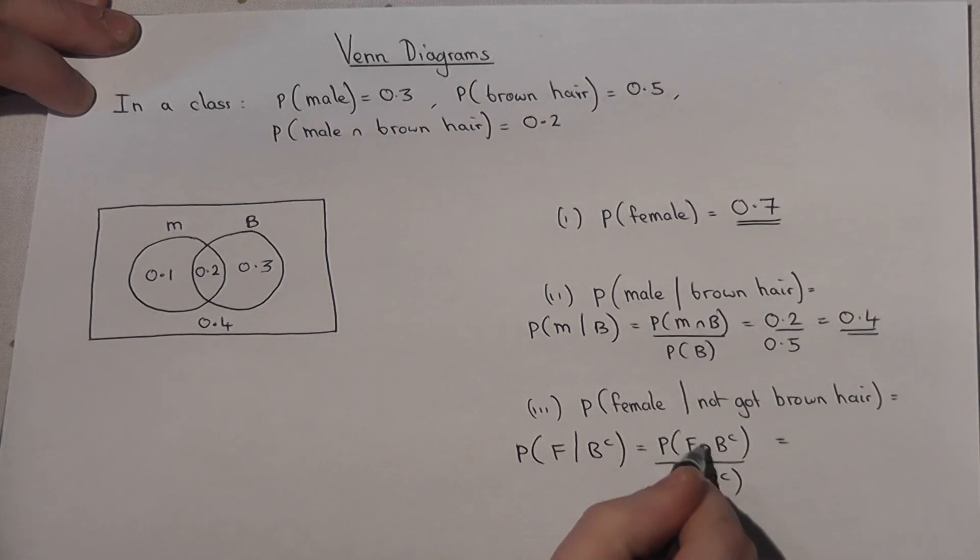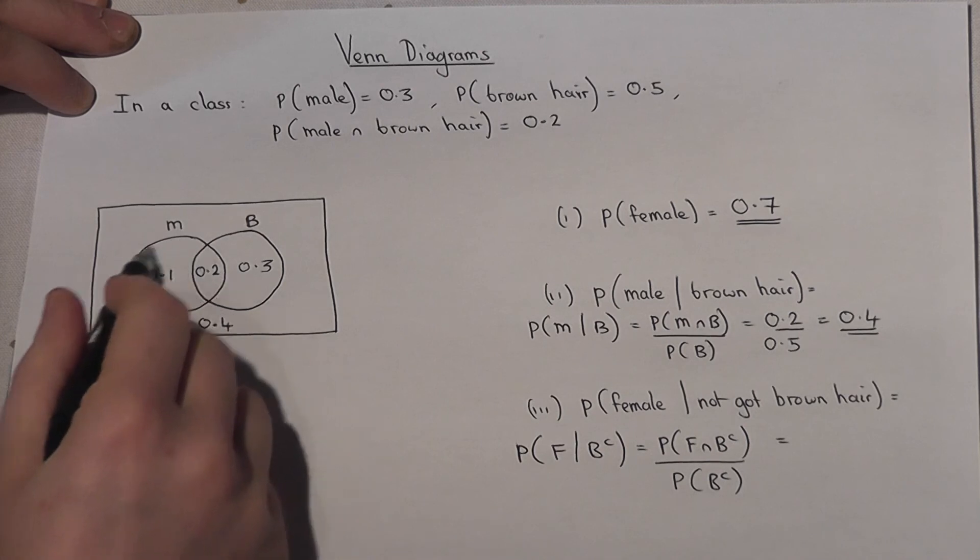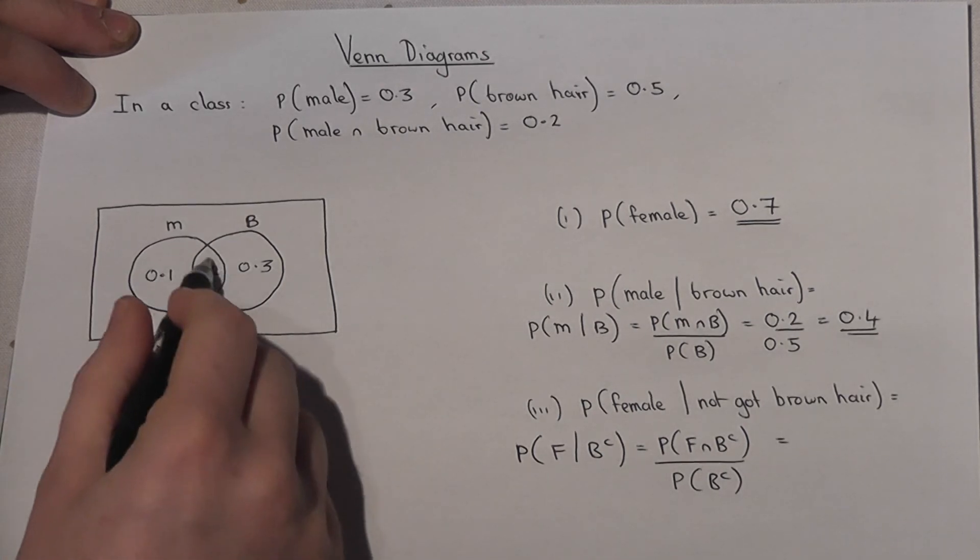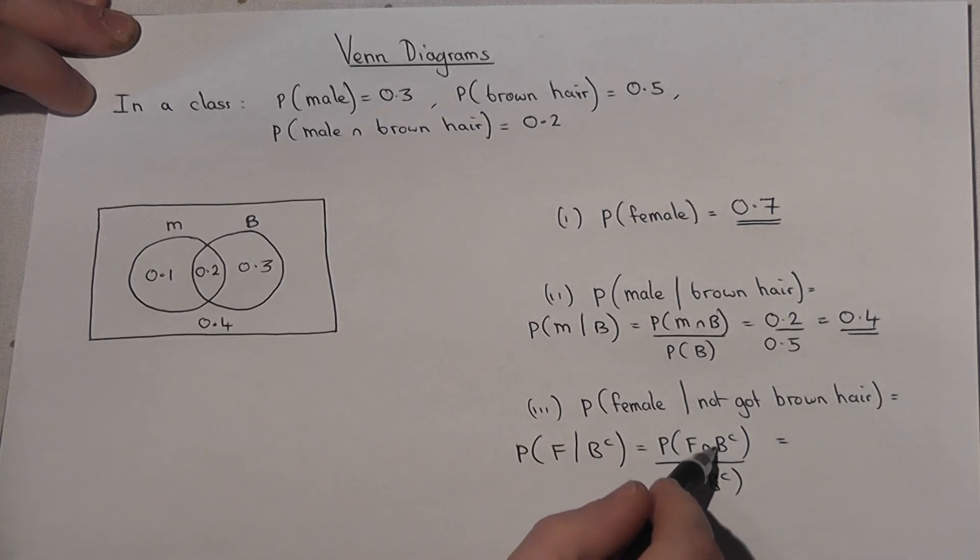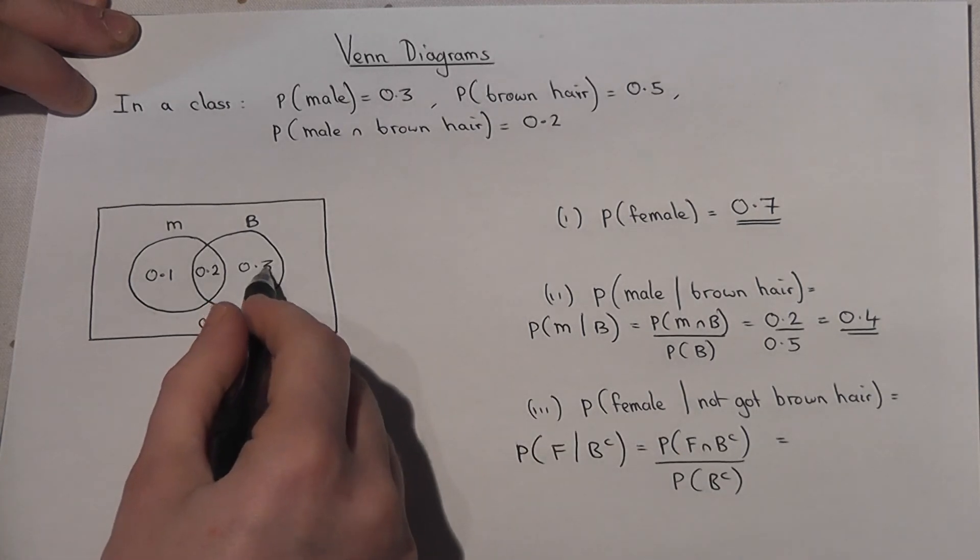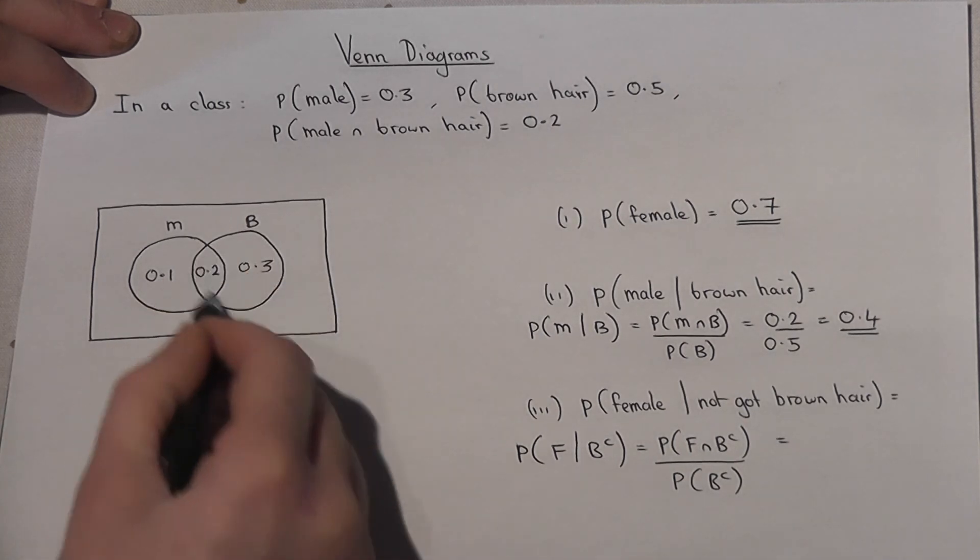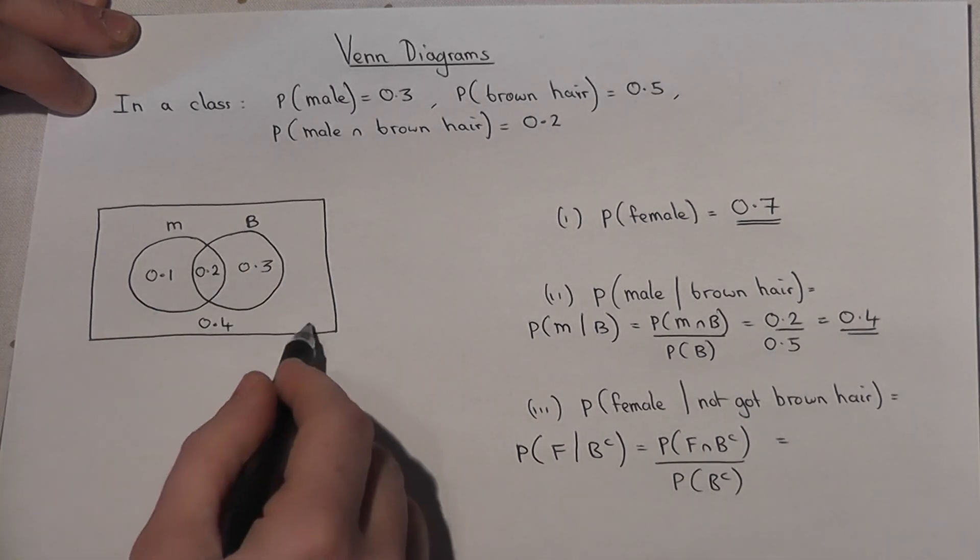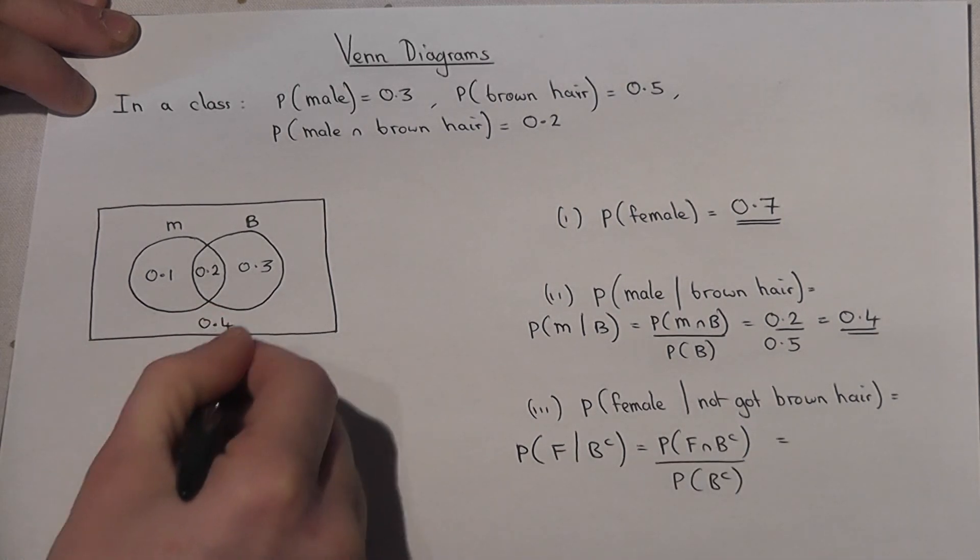So female and not brown hair. Well the female is anything not in that circle, it is those two numbers. And then 'and not brown hair' takes us just into this part of the Venn diagram here. So that's brown hair, so that's not brown hair. So female and not brown hair must be that 0.4 there.